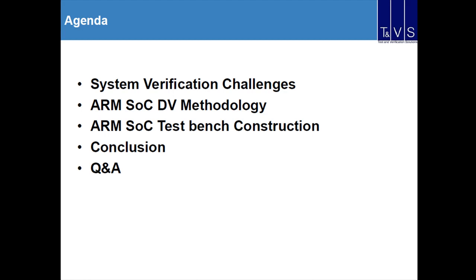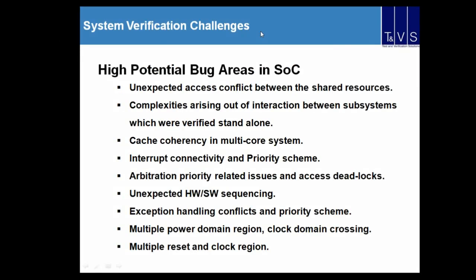These are the highest-potential challenge areas in SOC verification. The first point is unexpected access conflicts between shared resources. In SOC, we use common shared resources, and in a multi-core SOC, multiple cores may access the same IPs simultaneously. We use semaphore ports to block access so only one core uses a particular IP at a given moment.